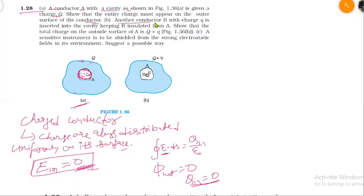The second part of the question is: another conductor B with charge Q is inserted into the cavity, keeping B insulated from A. This is a different conductor with charge Q placed inside the cavity of A.